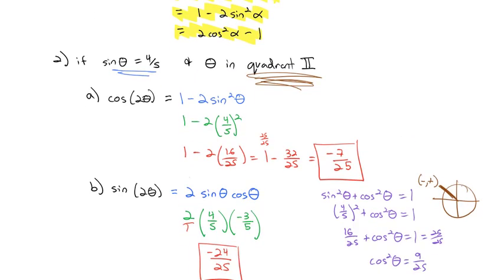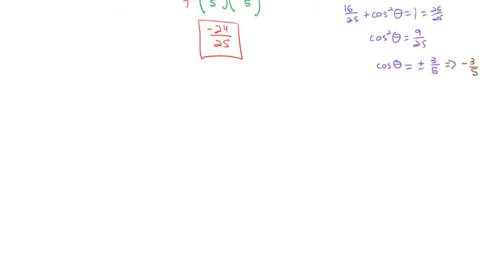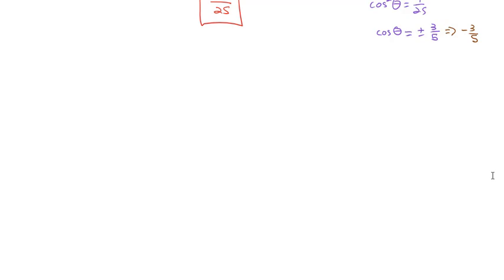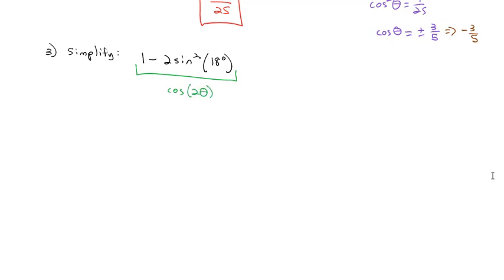The identities can help us find angles we don't know using those formulas. In addition to finding unknown values, we can also simplify expressions. For example, if we want to know what 1 minus 2 times sine squared of 18 degrees is, that expression is the double angle formula set up as cosine of double the angle — the cosine of 2 times 18 degrees, or simply the cosine of 36 degrees. And it's completely simplified.